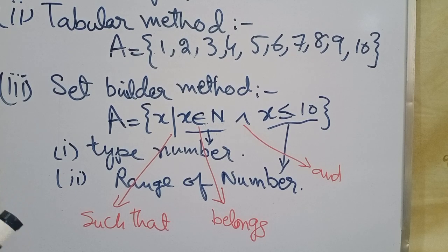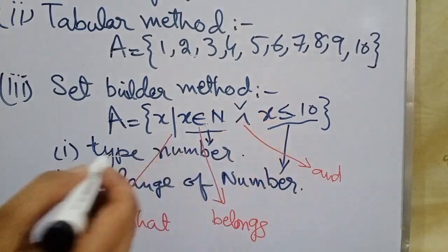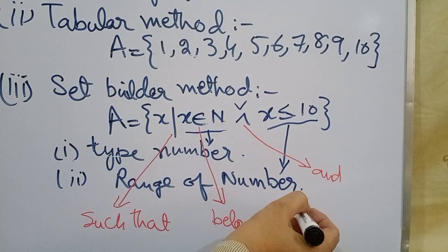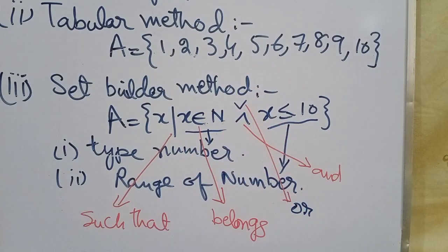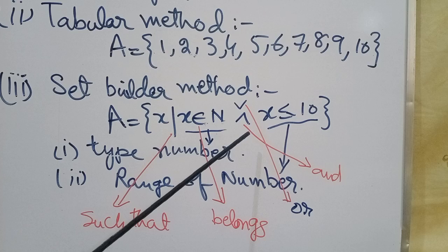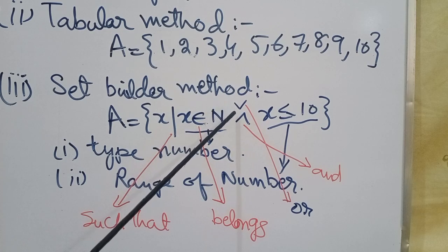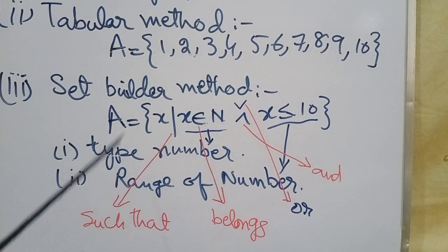Another sign sometimes used in the set builder method is '∈', read as 'belongs to' or 'r'. This sign is used for union or intersection, but it is also a part of set builder notation. So the set builder method includes these specific notations that must be understood.